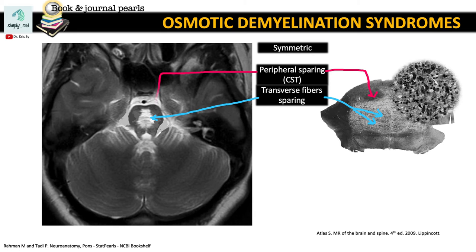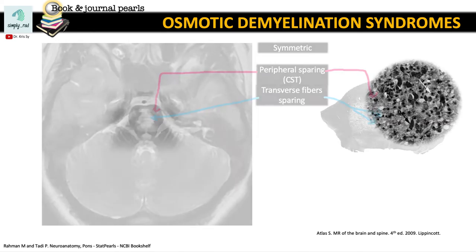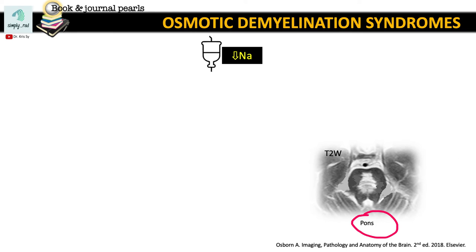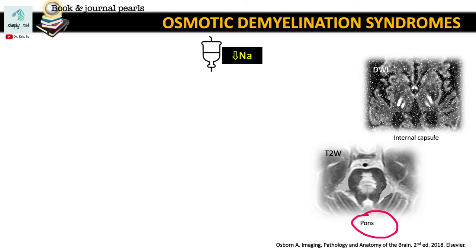Under the microscope, we see that myelin is lost, but the neurons are preserved. To clean up the myelin and apoptosis byproducts, macrophages are recruited. So now we know why the pons has that appearance. Because of myelin loss, the internal capsule and other white matter tracts in the cortex can also be affected in what is called the extrapontine demyelination.